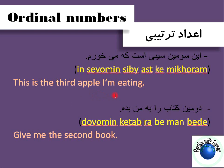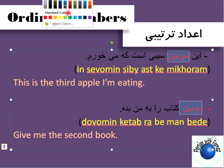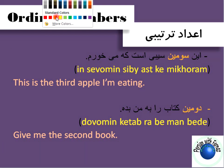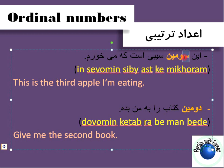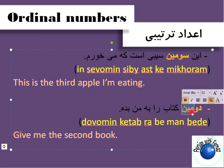For example, if you want to say 'this is the third apple I'm eating' or 'give me the second book,' you have to use ordinal numbers. In Persian, you can see the ordinal ones here on screen. As you can see, we had 'say' meaning three and 'do' meaning two, but you can see that I add something at the end of 'say' and 'do.' We pronounce it 'ohm' or 'ohmine.'